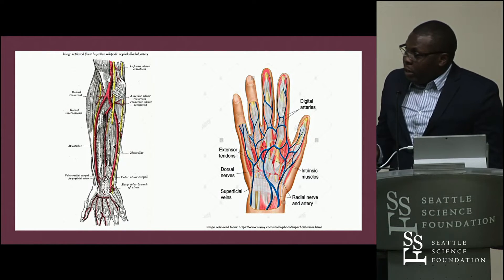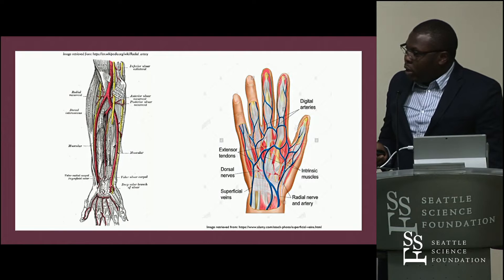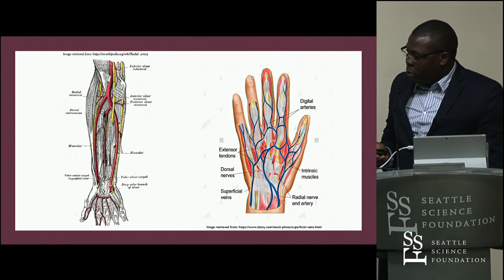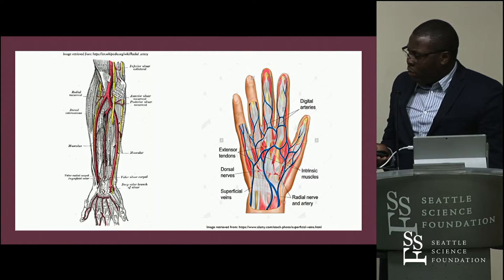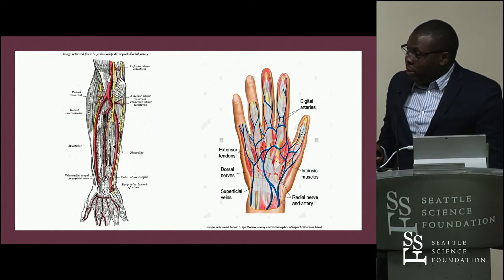The radial artery, as you can see right there, descends in the forearm, takes a lateral approach, and goes all the way down into the anatomical snuffbox, where it pierces the head of the first dorsal interosseous muscle, goes into the hand, and gives off a superficial palmar branch where it anastomoses with the ulnar artery. That's just the course of the radial artery as it descends in the forearm.